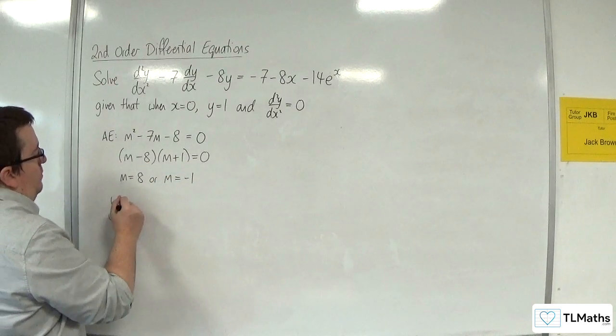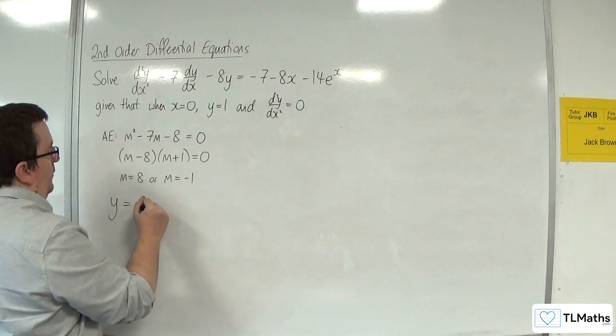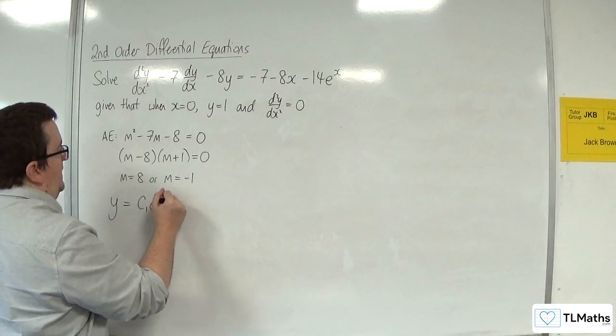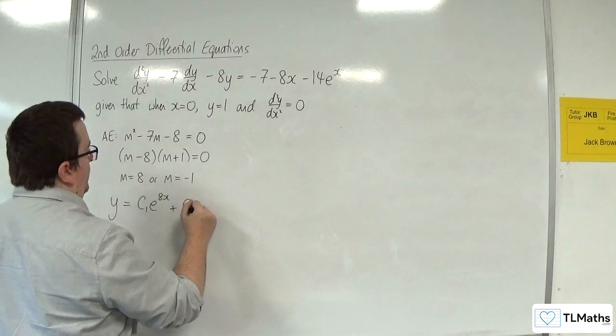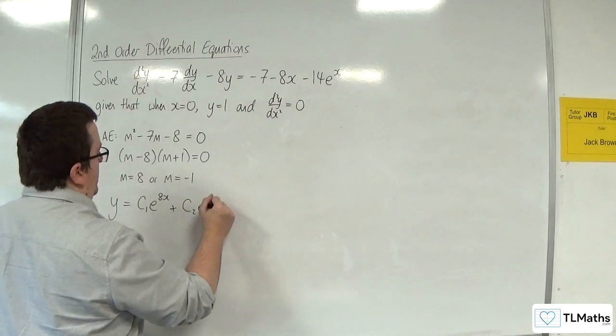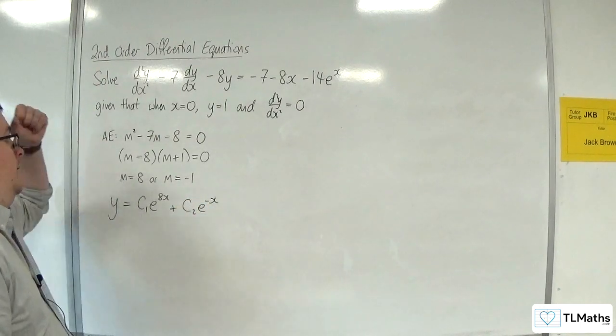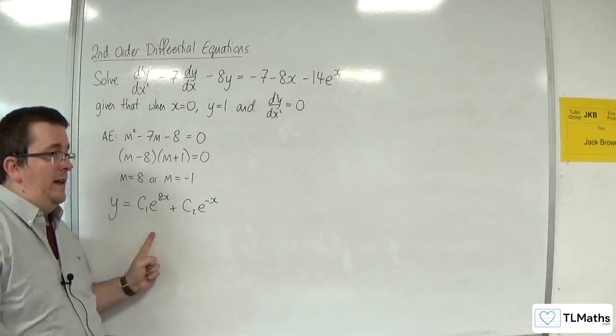So the complementary function would be y = c₁e^(8x) + c₂e^(-x). And that solves the homogeneous case.